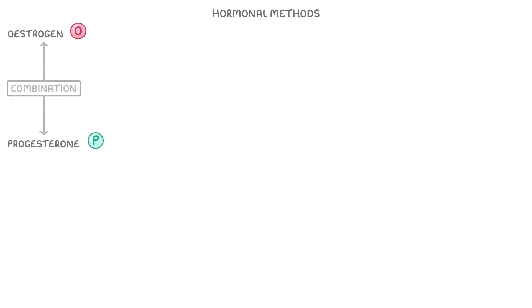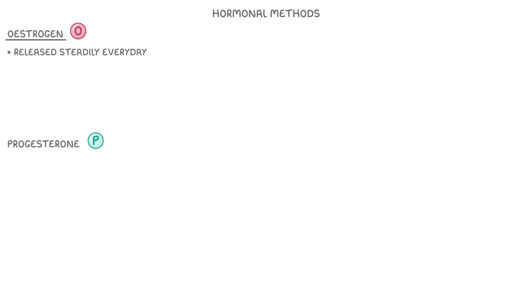One way to categorize all the different methods of contraception is to split them between those that use hormones and those that don't. The hormonal methods rely on releasing oestrogen, progesterone, or some combination of the two. If oestrogen is released steadily every day, then it inhibits the production of FSH. And as FSH normally stimulates egg development, it means that no egg will develop or be released.